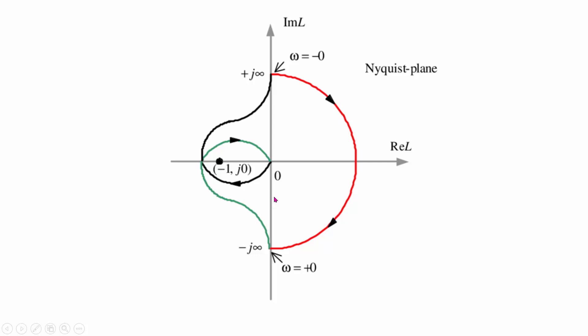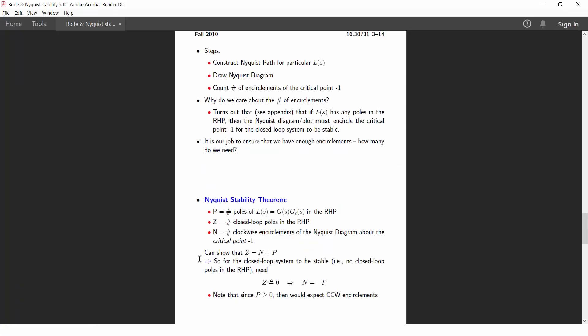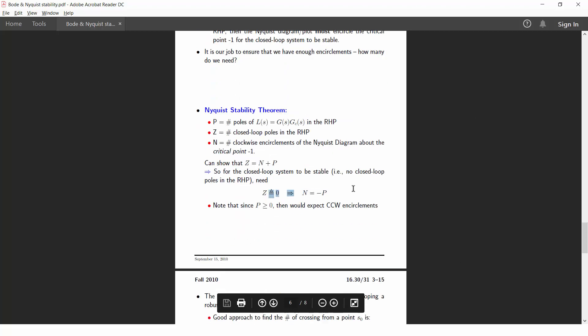So the condition is that we have a relation given as Z equal to N plus P. You will find some books using suffix Z plus and P plus. So they all mean the same. Now in case if the system is going to be stable, then Z should be equal to 0, that is N should be equal to minus P. Then only your system is going to be stable.